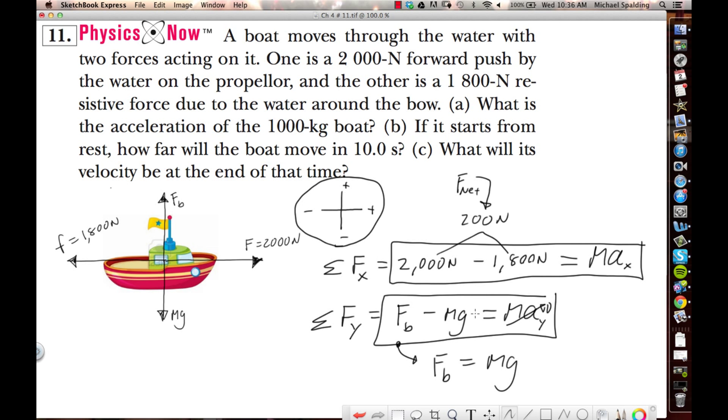Alright, so what does this question want? Let's see, A. What's the acceleration of the boat? So, here's what you do. You take this x equation, solve it for A. A is going to be 200 newtons, right, because 2,000 minus 1,800, that's 200. Divided by M, do we have the mass of the boat? Yep. So, 200 newtons divided by 1,000 kilograms, this comes out as 0.2 meter per second squared. That's the answer to the first question.